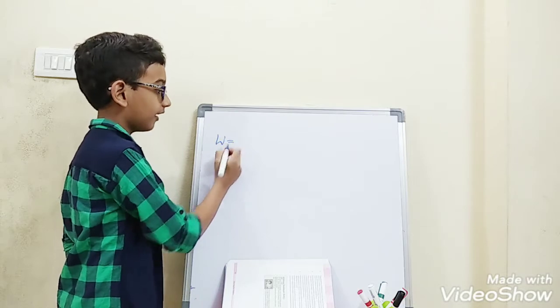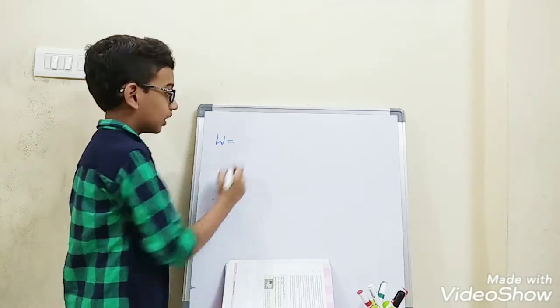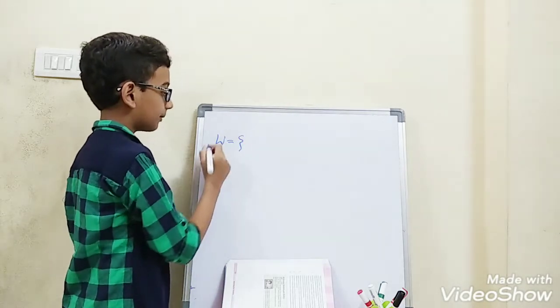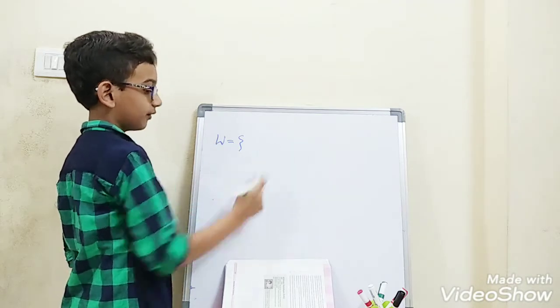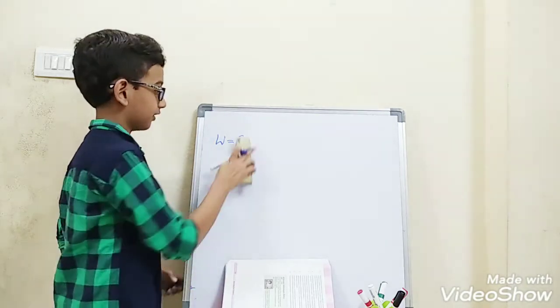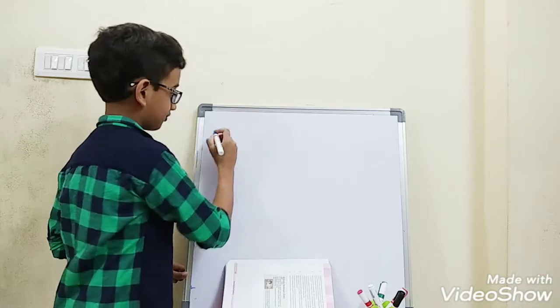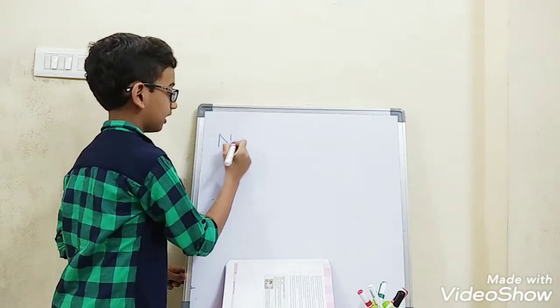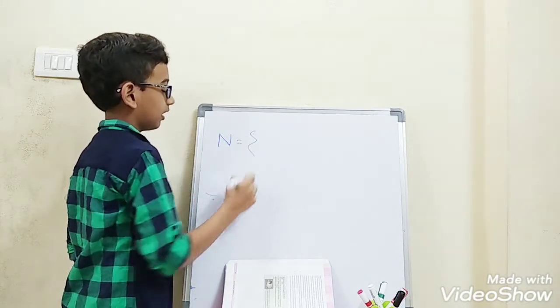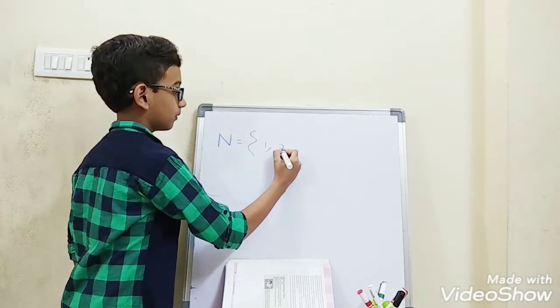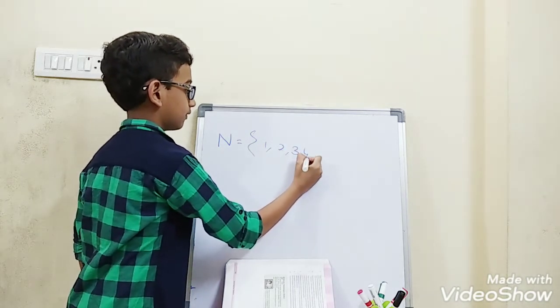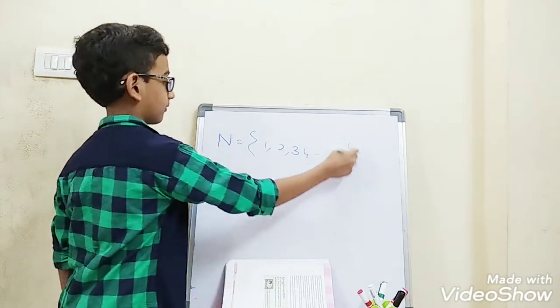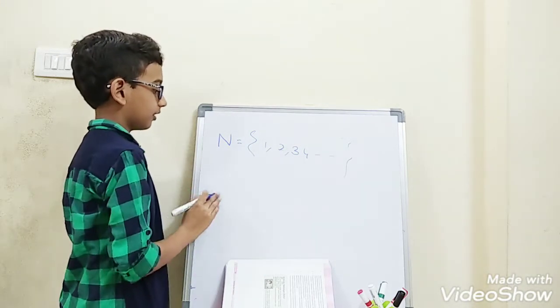Whole numbers are represented with W. First we learn what are natural numbers. Natural numbers are represented with N. That includes 1, 2, 3, 4 and so on. These are natural numbers.